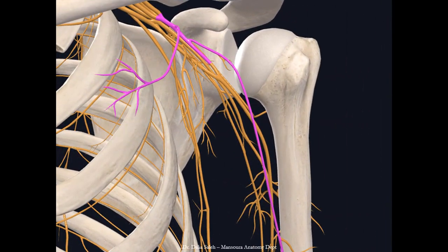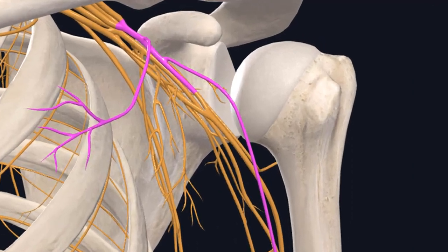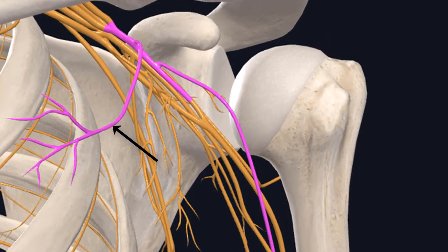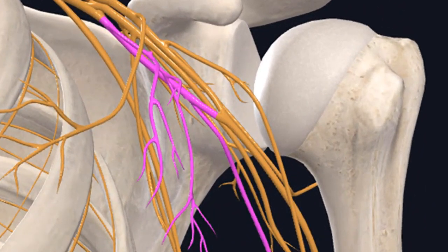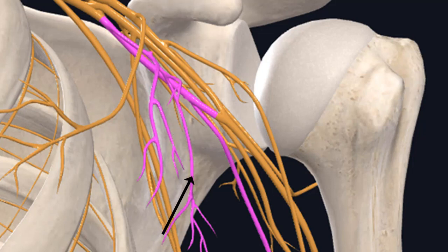The lateral cord of the brachial plexus has three branches: the musculocutaneous nerve, the lateral pectoral nerve — which supplies the pectoralis minor and major muscles — and the lateral root of the median nerve. The medial cord gives five branches: the ulnar nerve, the medial root of the median nerve, the medial pectoral nerve, and two cutaneous branches — the medial cutaneous nerve of the arm and the medial cutaneous nerve of the forearm.